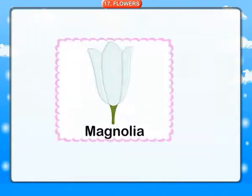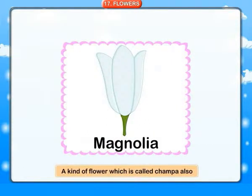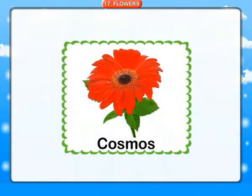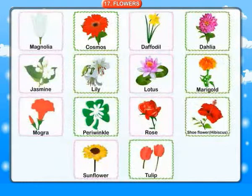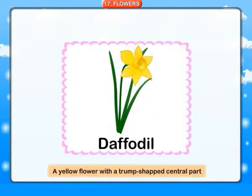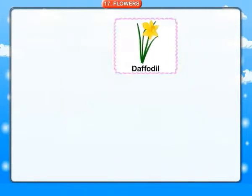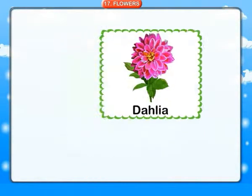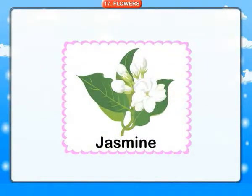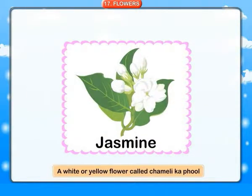Flowers. Magnolia: a kind of flower which is called Champa also. Cosmos: a dahlia-like flower of various colors. Daffodil: a yellow flower with a trumpet-shaped central part. Dahlia: a big bright colored flower. Jasmine: a white or yellow flower called Chameli ka phool.